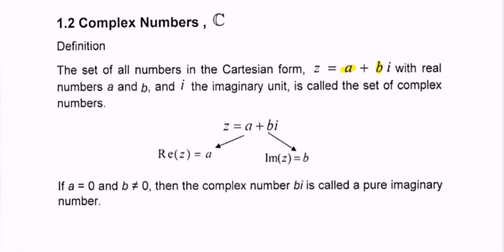The complex number z equals a plus bi, where a is the real part and b is the imaginary part. If a is equal to 0 and b is not equal to 0, then the complex number bi is called a pure imaginary number.